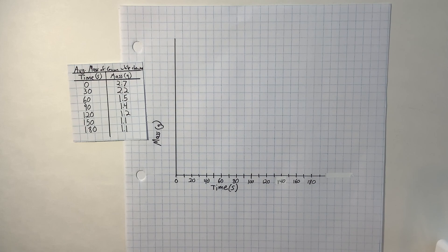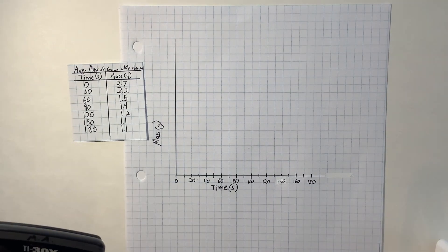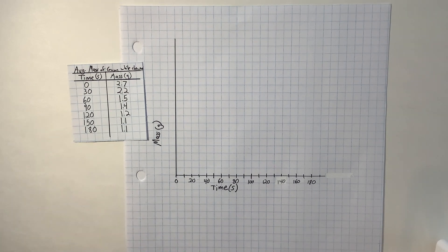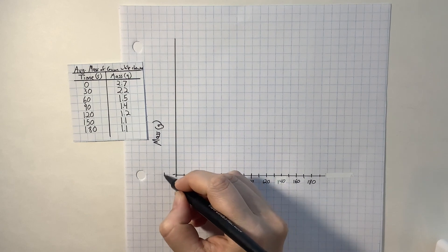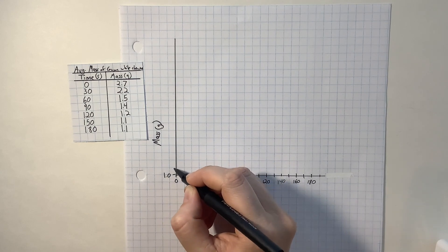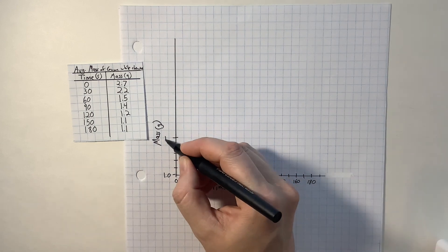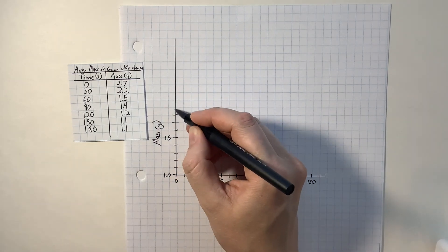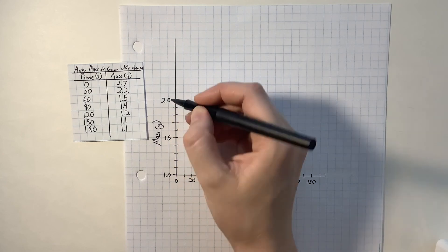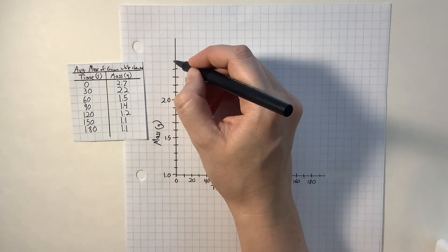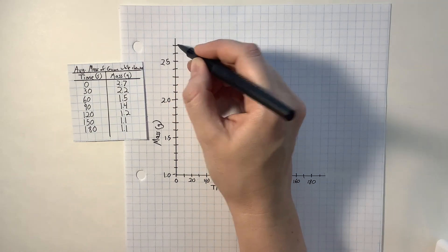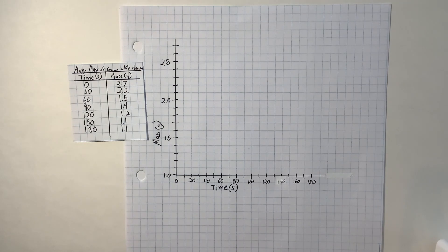My range is 1.6. Dividing that by the number of squares gives about 0.089, which I can round up to 0.1. So I can start my graph at 1.0 grams and go up in increments of 0.1: 1.1, 1.2, 1.3, 1.4, 1.5, 1.6, 1.7, 1.8, 1.9, 2.0, 2.1, 2.2, up to 2.7. There's my mass in grams on the y-axis.